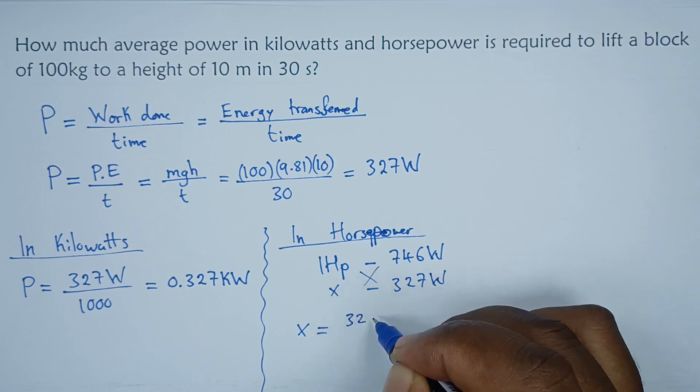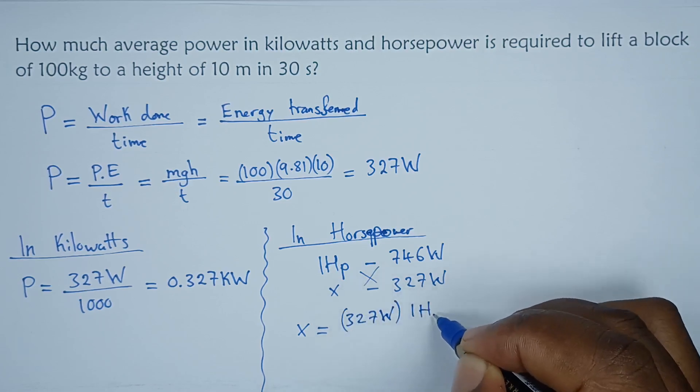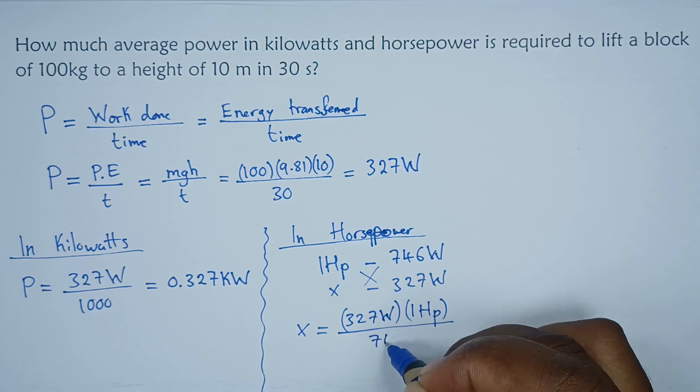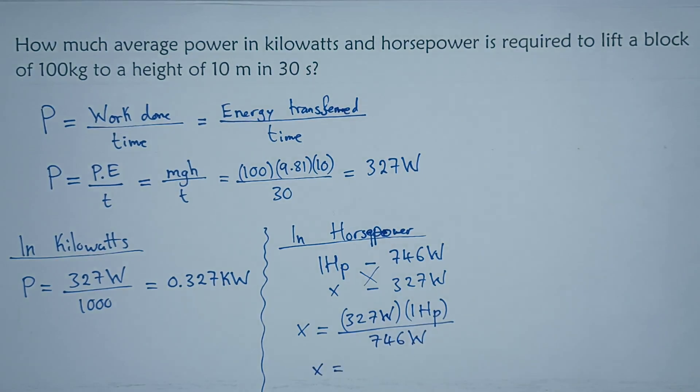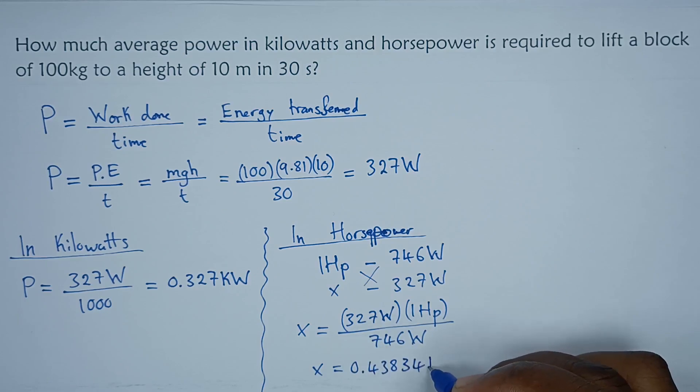so that the value of x will be given by 327 watts times a horsepower divided by 746 watts. So the watts will cancel, so 327 divided by 746 will give us 0.43834 HP.